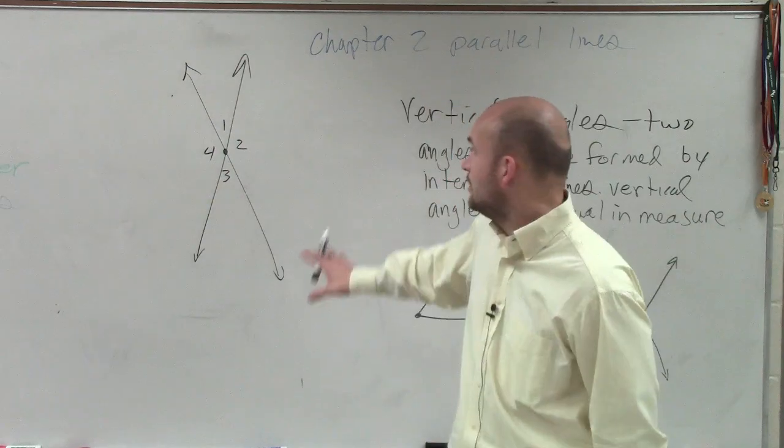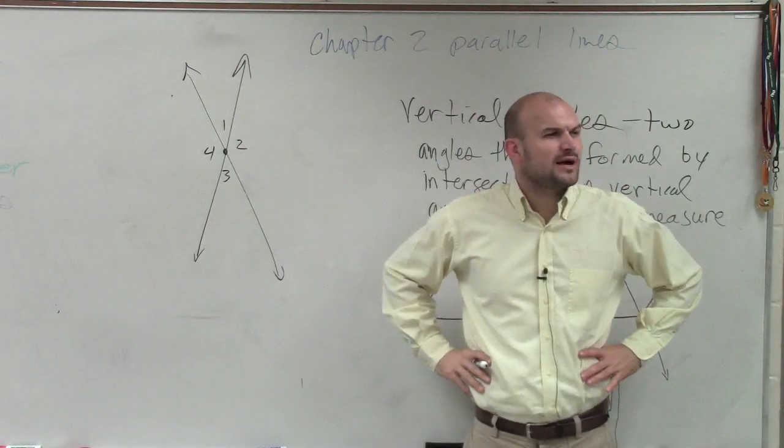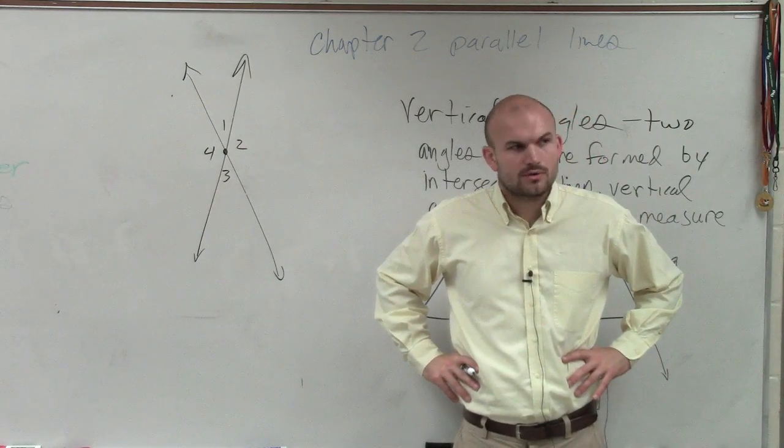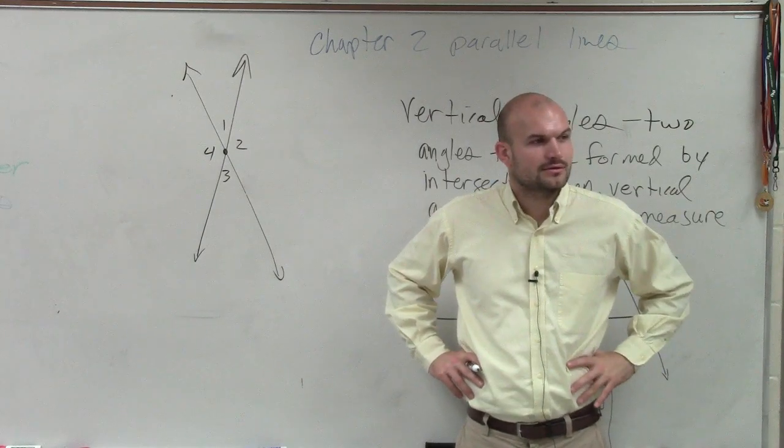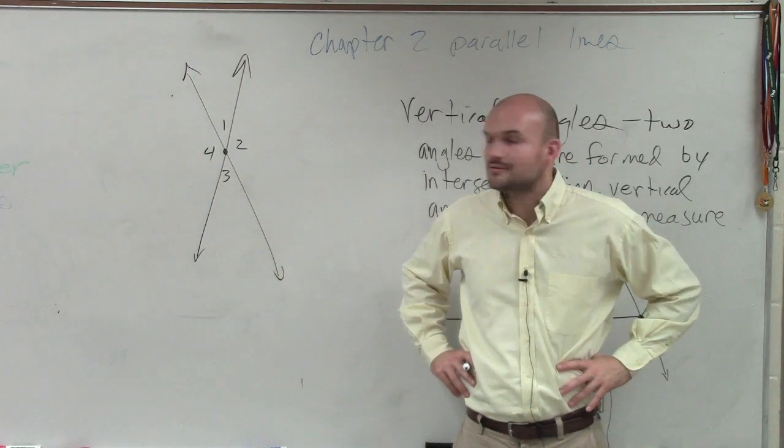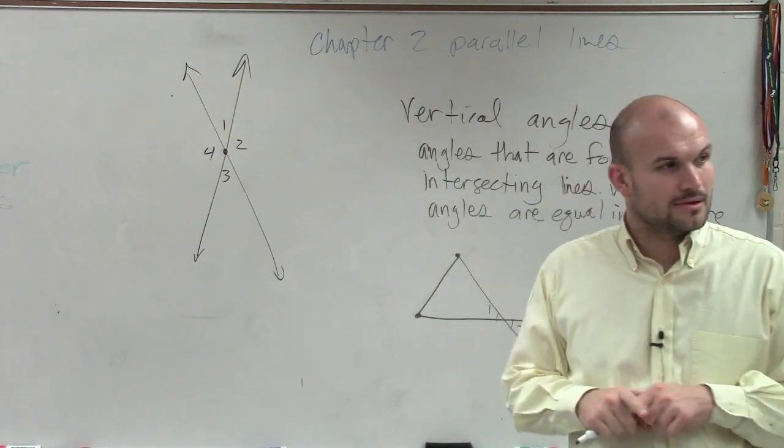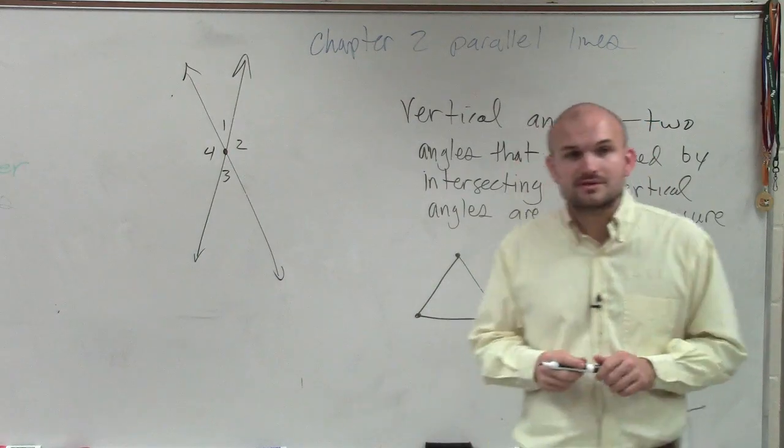So if you were looking at one, two, three, and four, what angles would you say probably look like they're kind of similar to each other? Probably have the same angle. Why would you say one and three? Because they're both acute. They're both acute. And what would you say about four and two? Both obtuse. Both obtuse. Yeah, very good.